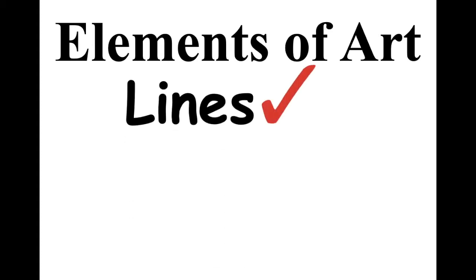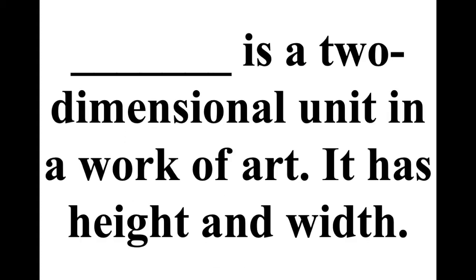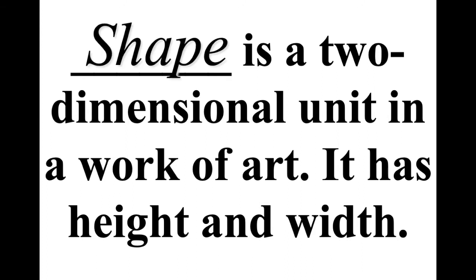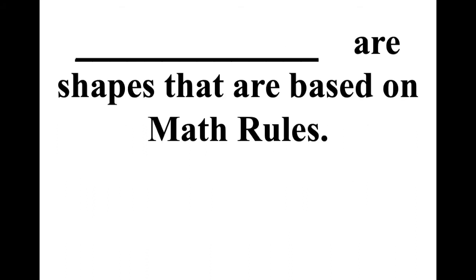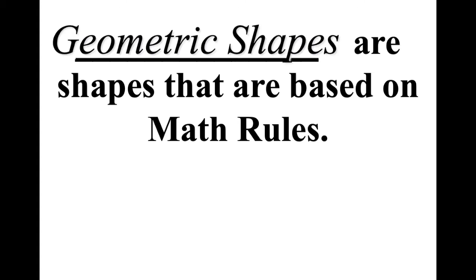The project after lines, we were working with shapes. Shapes is a two-dimensional unit in a work of art, and we can only measure them by their height and width. The main thing about shapes is there are three different kinds of shapes. Last week's lesson, we only focused on shapes that are based on math rules. Those are called geometric shapes.